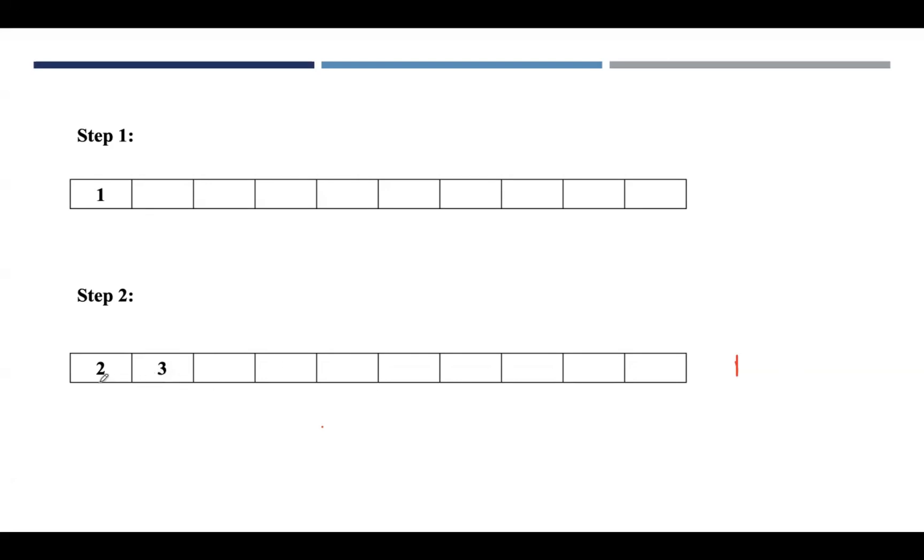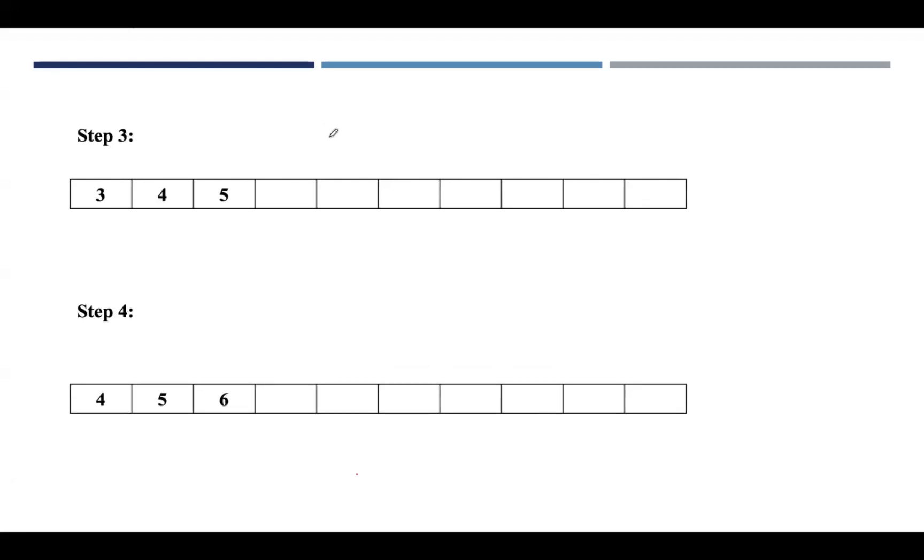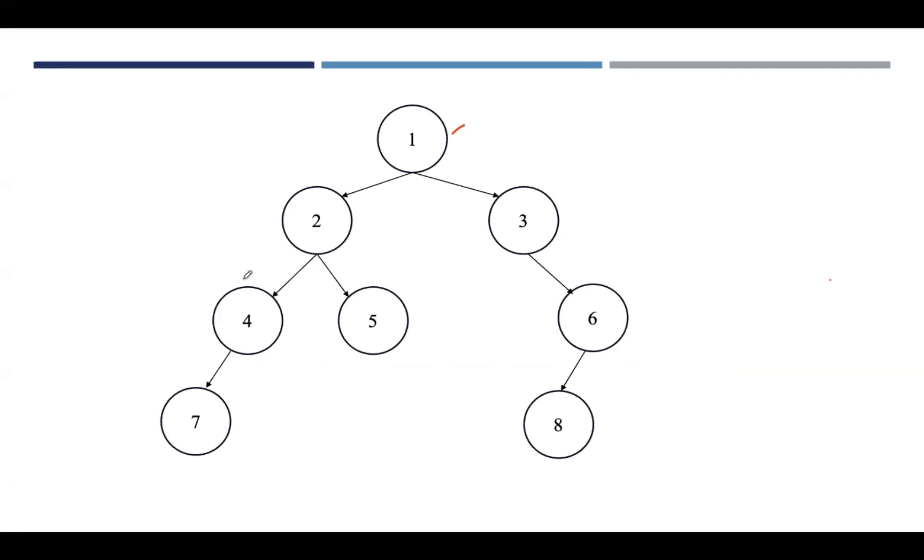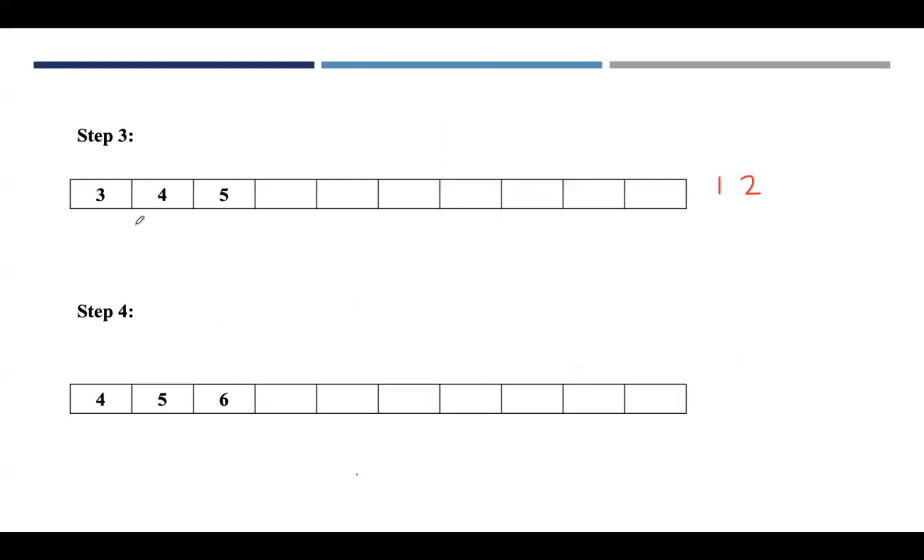The next element is 2. Pop 2 and find out adjacent vertices of 2. The adjacent non-visited vertices of 2 are 4 and 5. Since 3 is already present in the queue, insert 4 and 5.